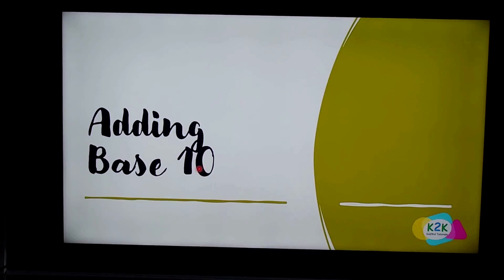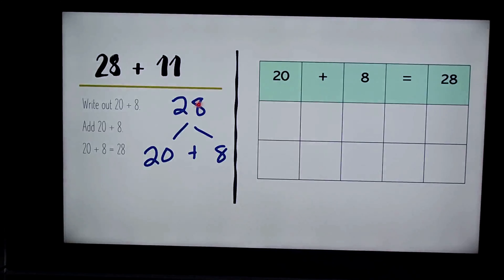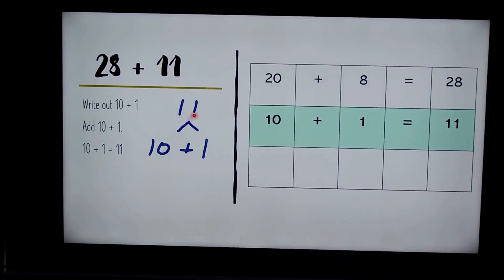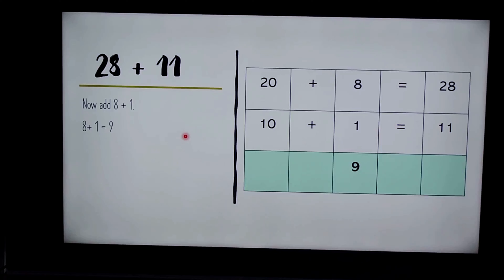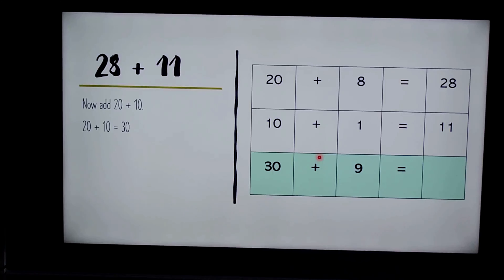Next we're going to be adding using base ten. The first equation is 28 plus 11. We write out 28 as twenty plus eight, and 11 as ten plus one. Then we add eight plus one which equals nine, and twenty plus ten which equals thirty. Lastly we add thirty plus nine which equals thirty-nine.